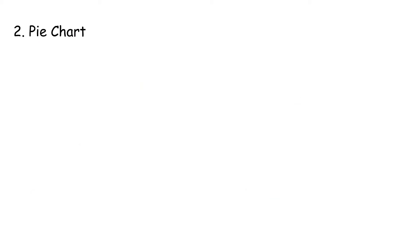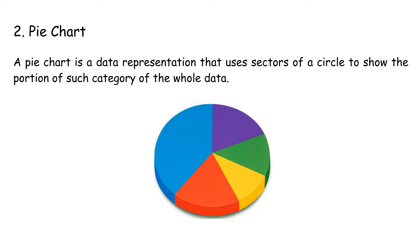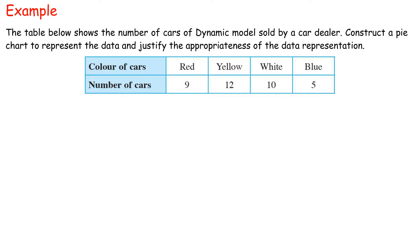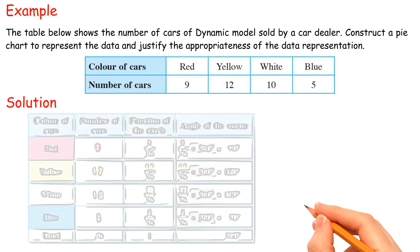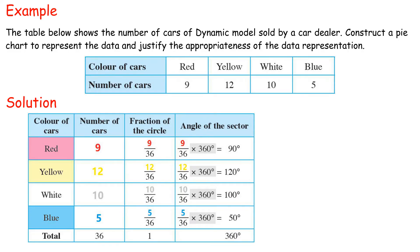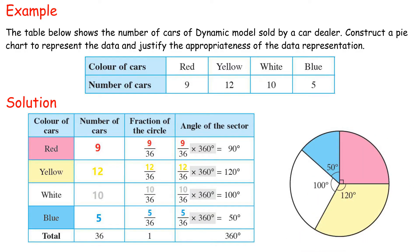Type 2 — Pie Chart: A pie chart uses sectors of a circle to show the proportion of each category of the whole data. Steps to construct: find the angle of each sector, draw a circle divided into sectors based on calculated angles, label each sector, and write the title. This pie chart is suitable for comparing each car color with the total number of cars.